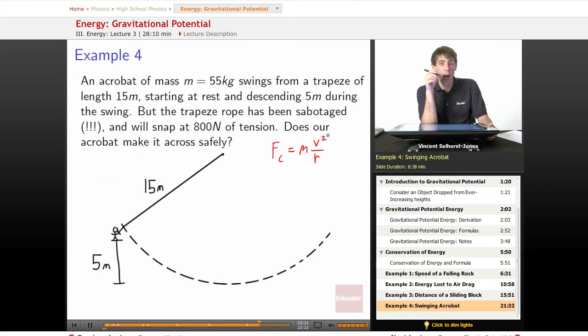At what point will he be traveling fastest? At what point on the circle will the acrobat be traveling fastest? It's going to be the point where he's converted all of his initial gravitational potential into motion, which is going to be the lowest point on the circle. That's going to have the largest v. So the largest v occurs at the bottom.